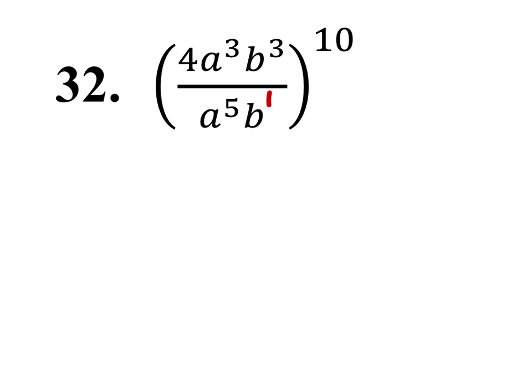Once again, we have this b with a power of 1, but it was a phantom 1, so we're going to show it so we can distribute the 10. The 4 has a power of 1 as well. We'll distribute the 10 into each of the exponents, whether in the numerator or denominator.